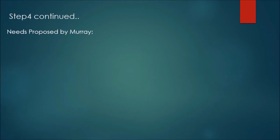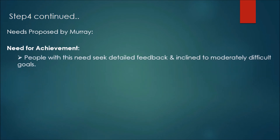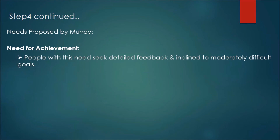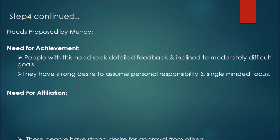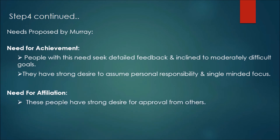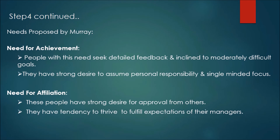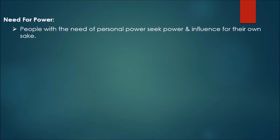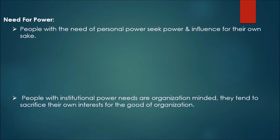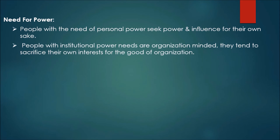Needs proposed by Murray include: Need for Achievement — people with this need seek detailed feedback, are inclined toward moderately difficult goals, have a strong desire to assume personal responsibility, and demonstrate single-minded focus. Need for Affiliation — these people have a strong desire for approval from others and tend to thrive by fulfilling the expectations of their managers.